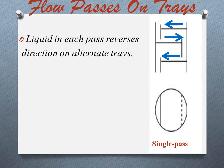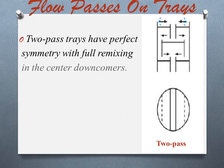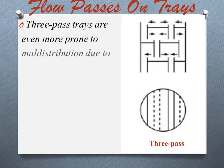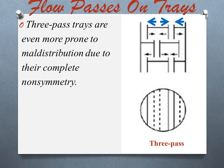In the 2-pass arrangement, 2-pass trays have perfect symmetry with full remixing in the center downcomer. 3-pass trays are even more prone to maldistribution due to their complete non-symmetry. Most designers avoid 3-pass trays altogether.